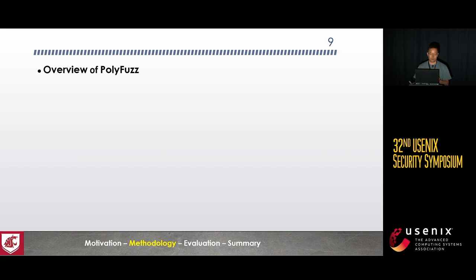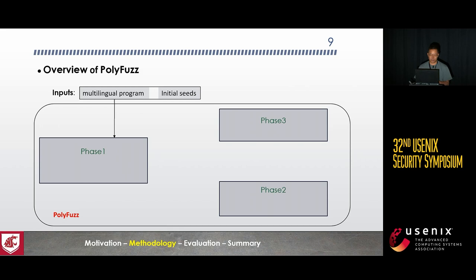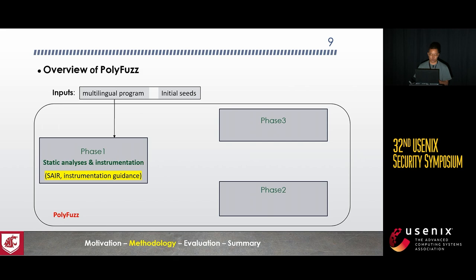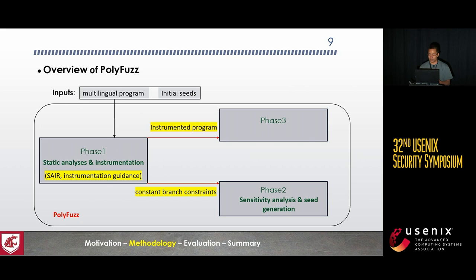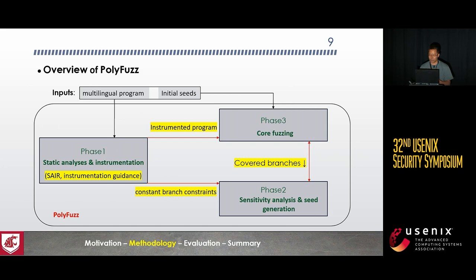In this slide, I will show the basic workflow of PolyFast. In brief, PolyFast works in three primary phases to fuzz a multi-language program. In phase one, static analysis, it runs language-specific analysis to generate SAIR, computes instrumentation guidance to reduce runtime overhead, and instruments the target program for phase three while collecting constant constraints and branch constraints for phase two. During runtime, it runs sensitivity analysis in phase two and core fuzzing in phase three collaboratively. With the collected branch data, the sensitivity analysis continuously trains regression models and generates effective inputs to feed the core fuzzing, improving fuzzing efficiency.